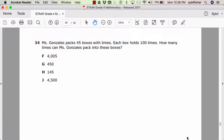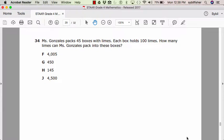Number 35. Mrs. Gonzales packs 45 boxes with limes. Each box holds 100 limes. How many limes can Mrs. Gonzales pack into these boxes? F, 4,005. G, 450. H, 145. Or J, 4,500.